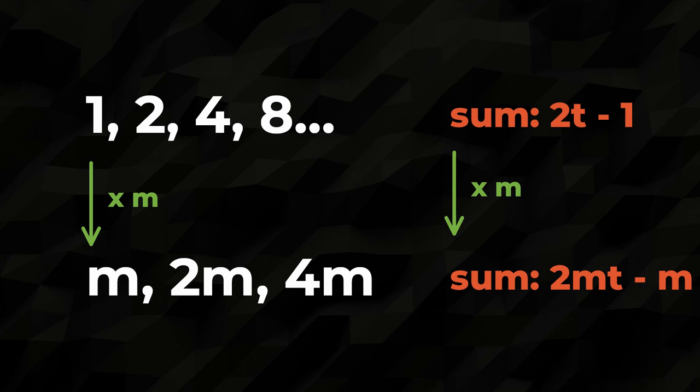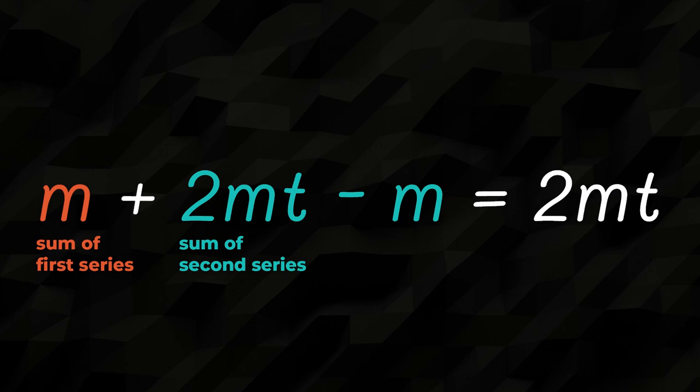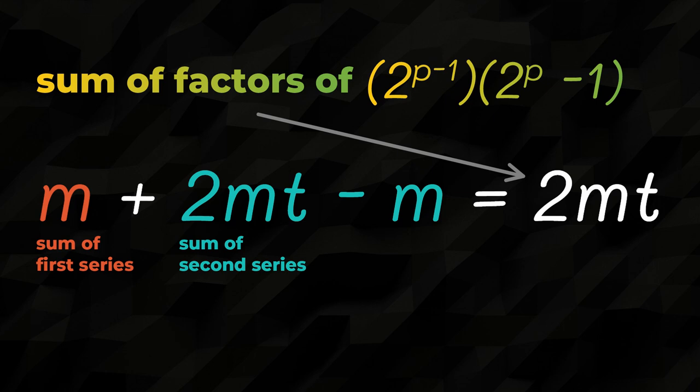The last step we need to take to find the sum of the factors of this expression is to add the sum of the first series to the sum of the second series. The result is 2 times m times t, which means the sum of the factors of our perfect number template, part m times part t, is 2 times part m times part t. This template really does create perfect numbers.